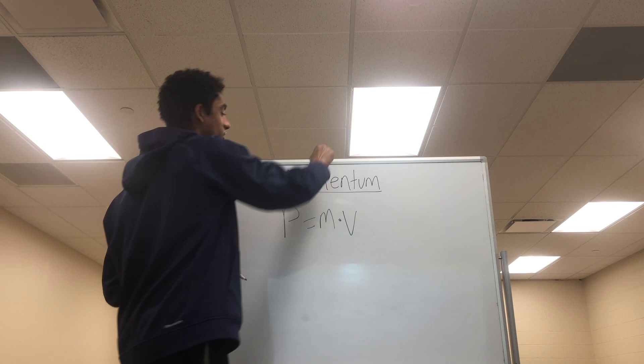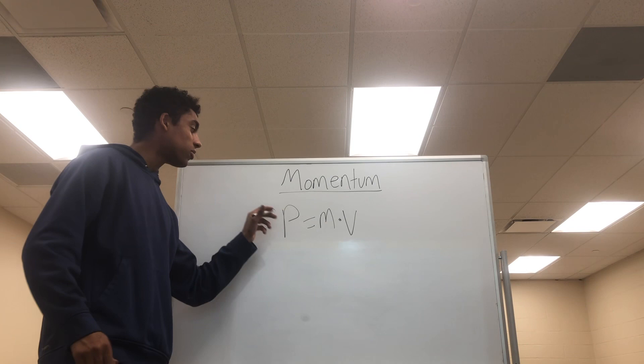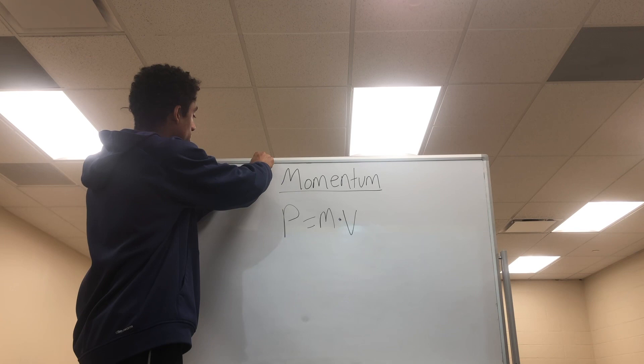Because we're multiplying mass, which is measured in kilograms, and velocity, which is measured in meters per second, the units for an object's momentum will be kilograms times meters per second.